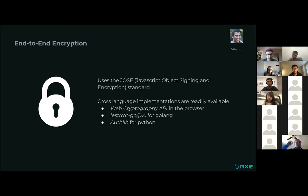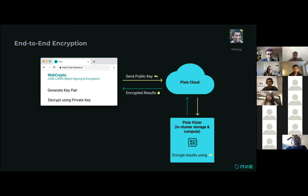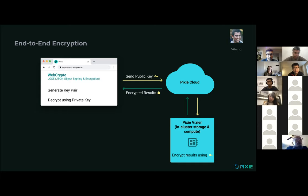Let's walk through an example of how end-to-end encryption works from the UI. Before we can make any requests to Vizier for data, the browser first has to generate a key pair. We use the Web Crypto API for this, which all major browsers support. The public key from this key pair is then sent to Viziers on every request to run a script — anytime you want to get script results, the browser will send this public key along with the rest of the request to the Viziers.